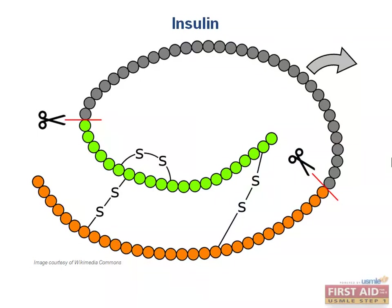When insulin is made, it is first produced as proinsulin. This molecule has three components: the alpha chain, the beta chain, and the C-peptide. Proinsulin is then processed by the Golgi, where the C-peptide molecule is removed, indicated by this arrow here. The alpha and beta chains remain to make up insulin, which is released into the bloodstream.